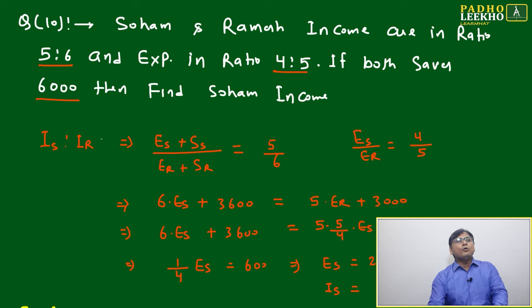If both save rupees 6000, then find Soham's income. They have just twisted the question because it is not given in the form of multiplication; this will be in the form of addition.